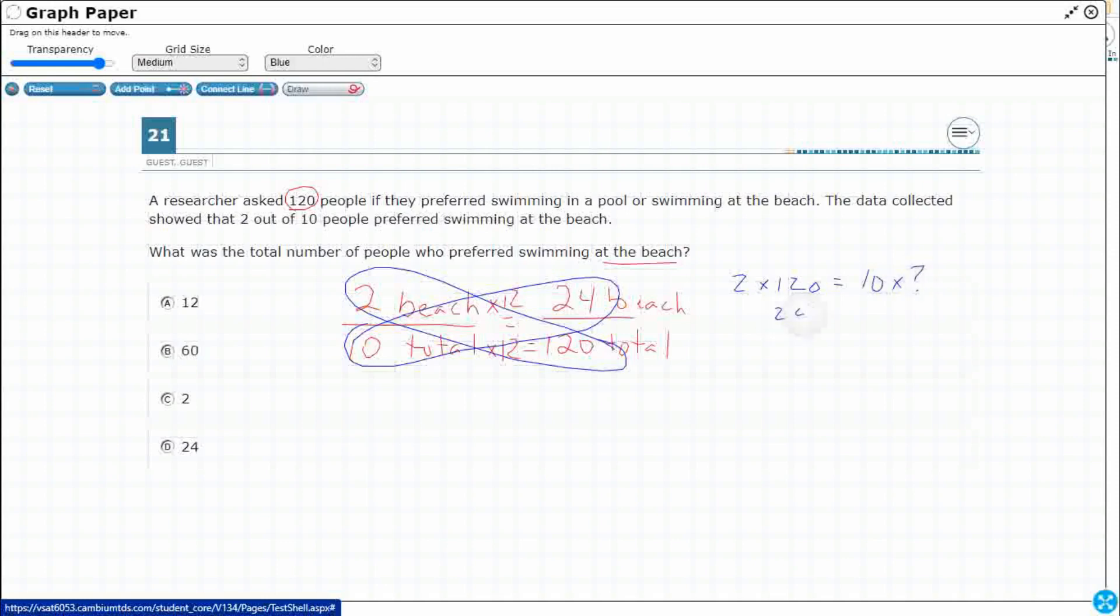I could have said 2 times 120 is going to equal 10 times my unknown. So that's 240 equals 10 times my unknown. And so I would need to divide both sides by 10, and that's going to give me my 24.